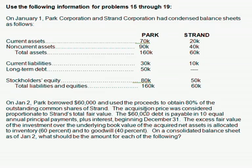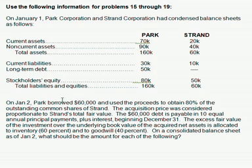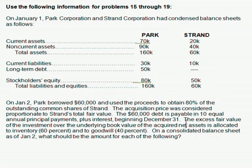The third sentence reads: The $60,000 debt is payable in 10 equal annual principal payments plus interest beginning December 31st. That one's just detailing the loan — it's telling us all about the loan that we mentioned earlier.